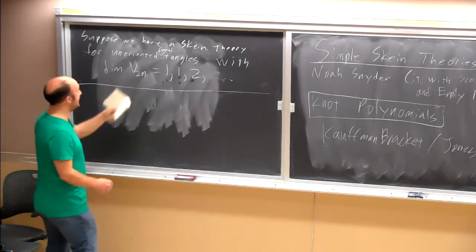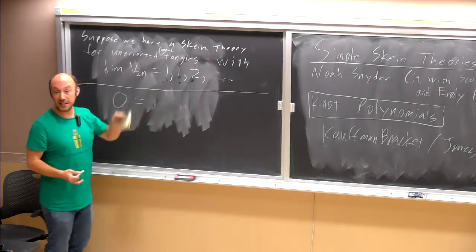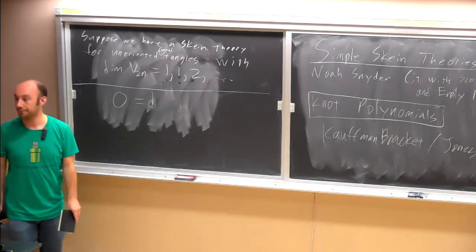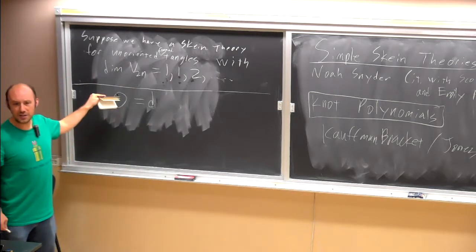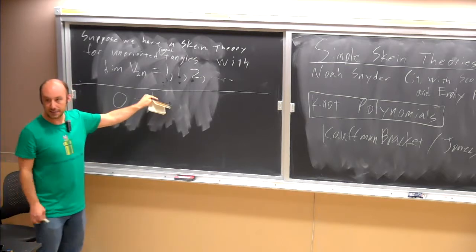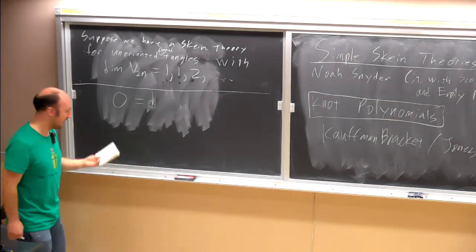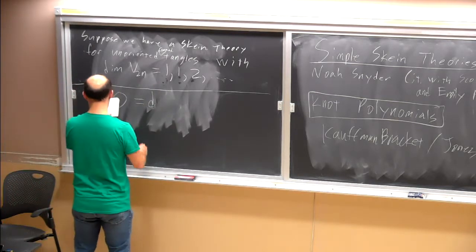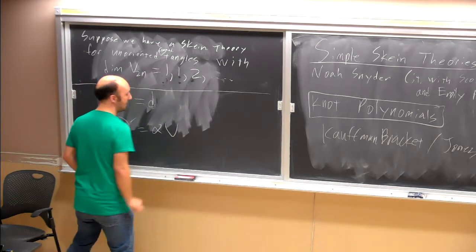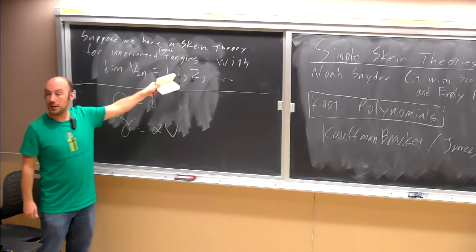Since this space is one-dimensional, a circle should be some multiple d times an empty diagram. And I also know that if I take a twist, this is going to be alpha times the strand, for some number alpha. These come from this being one-dimensional.